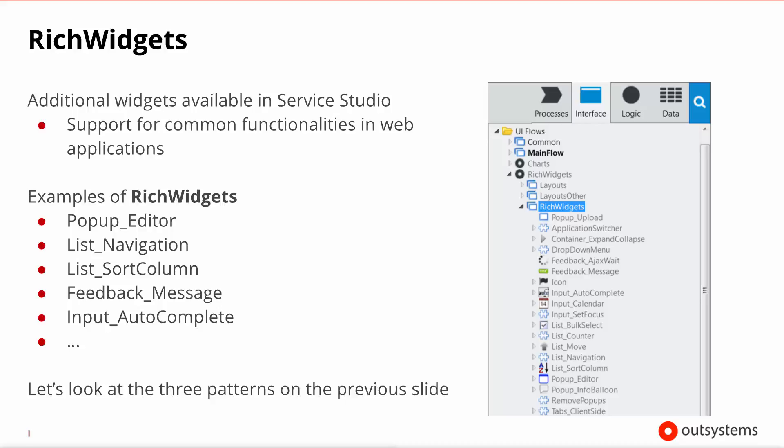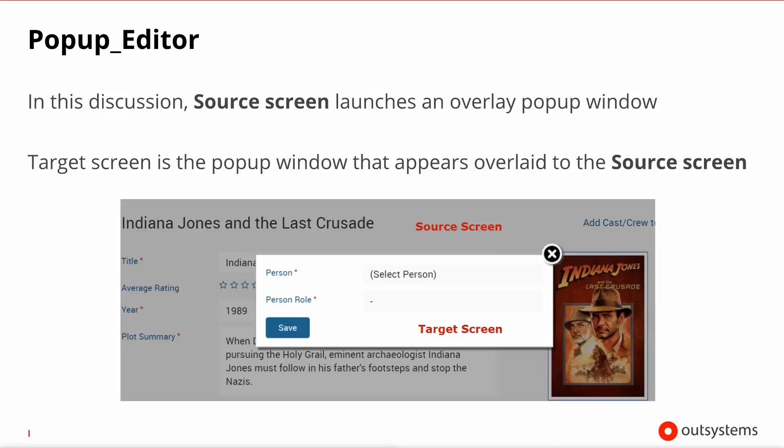Let's look at these three patterns in more detail. The pop-up editor allows you to have one of your screens displayed as if it were a modal window overlaid over the current screen. For the purpose of this discussion, let's call the source screen the original screen that launches an overlay, and the target screen the pop-up that is opened over the source screen.